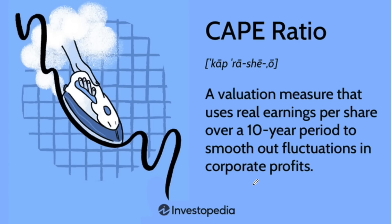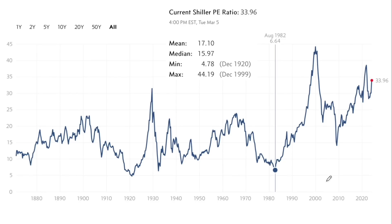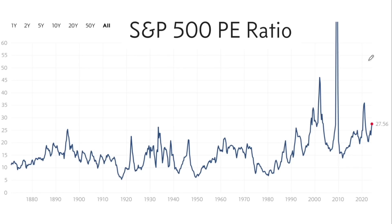For those not familiar with the CAPE ratio or the Shiller PE ratio, it is a valuation measure that uses real earnings per share over a 10-year period to smooth out fluctuations in corporate profits. This is the formula for the CAPE ratio. When you adjust valuations for that 10-year period — which includes recessions to smooth things out — you can see whether a market is expensive or cheap, and you can see those cycles compared to the normal PE ratio, which gives just temporary data and is much more choppy.